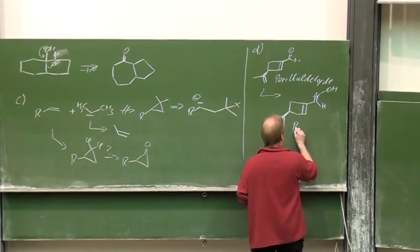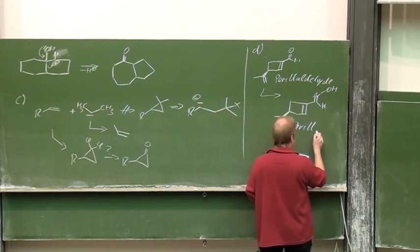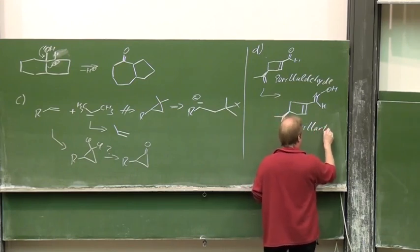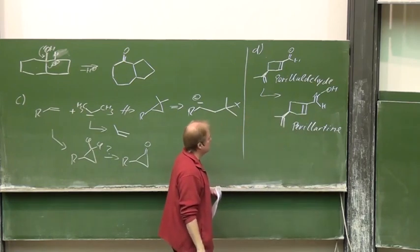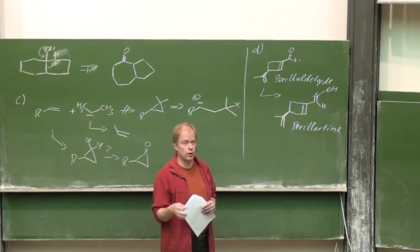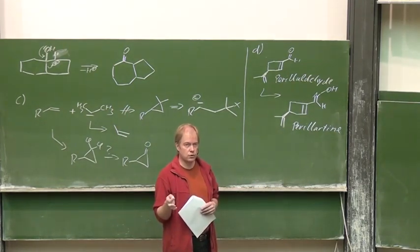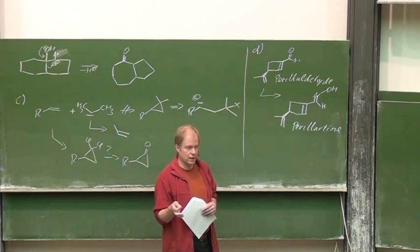Might be interesting to know that the corresponding oxide, its name is perillartine, this is 2000 times more sweet than sugar and is applied as a sweetener mainly in Japan.